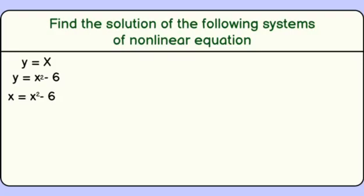Now, let's rearrange the equation and set it equal to 0. So it becomes x squared minus x minus 6 equals 0.